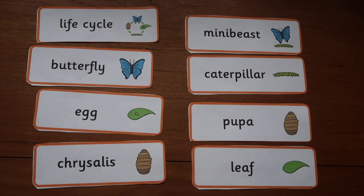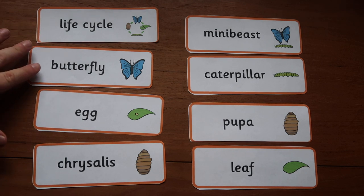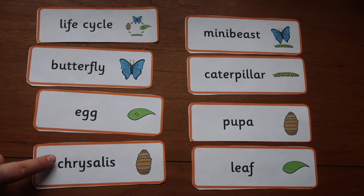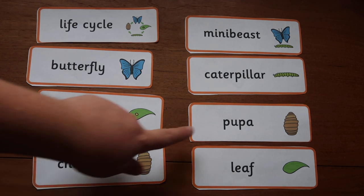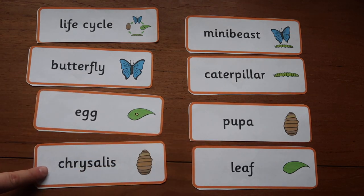As you can see, these word cards are a great way to get to know the key vocab that we all need for this topic, such as chrysalis. One fun way to learn these words would be to play a silly voice game by saying each word in a different way.